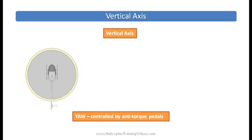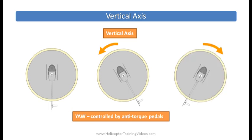Here we have a view of a helicopter from above, and if we put in left anti-torque pedal, we would yaw the helicopter left on the vertical axis. And likewise, if we were to put in right pedal, we would rotate the helicopter right on the yaw axis, or vertical axis.